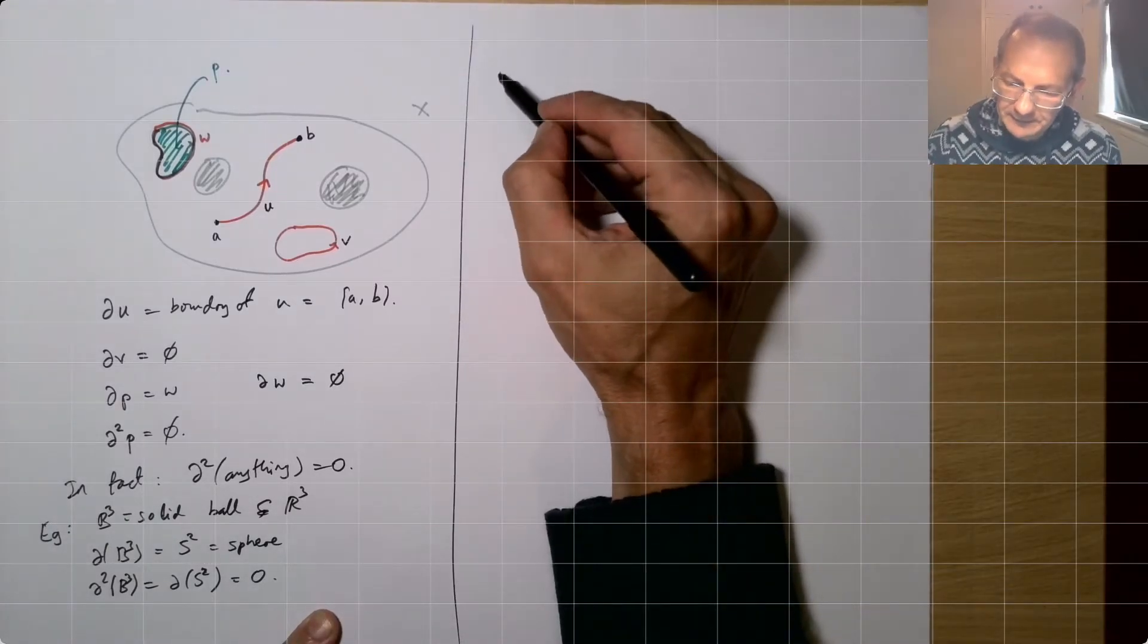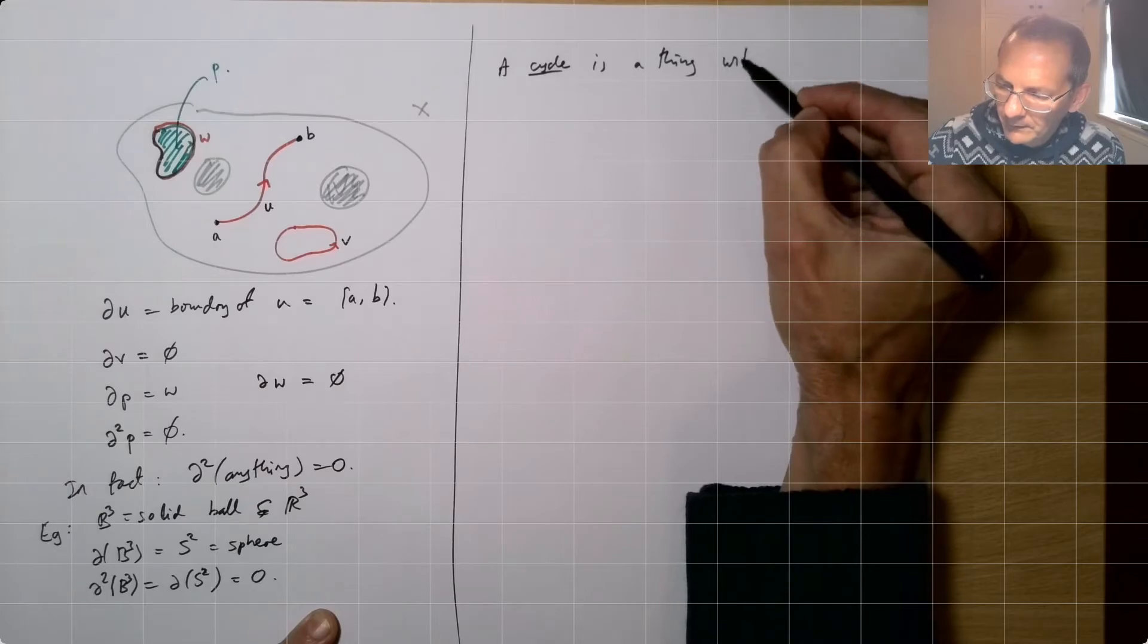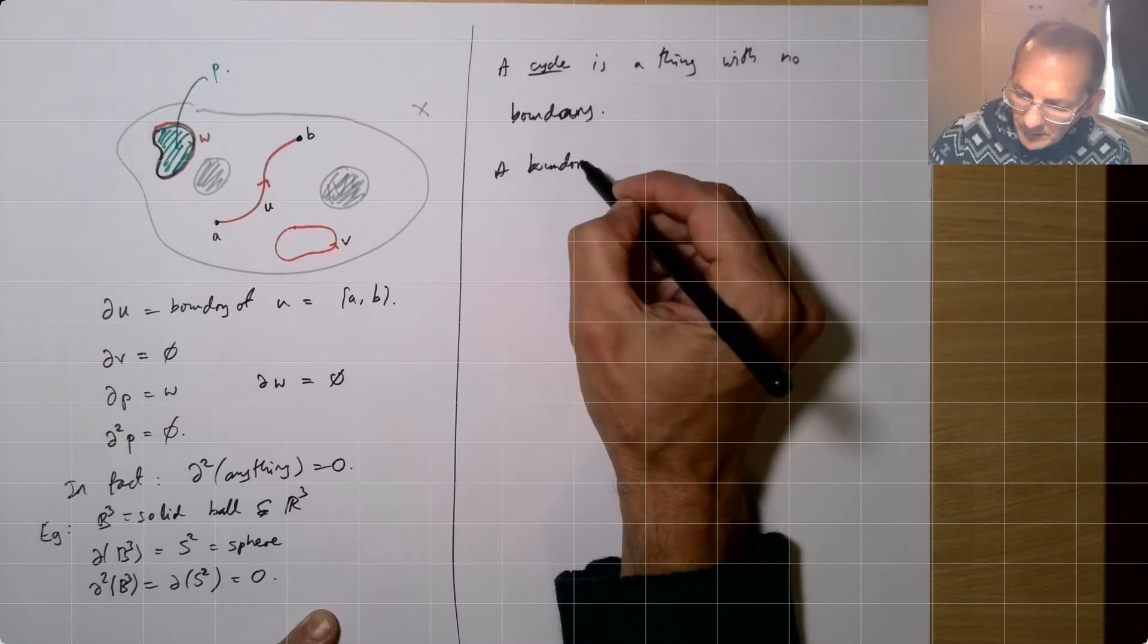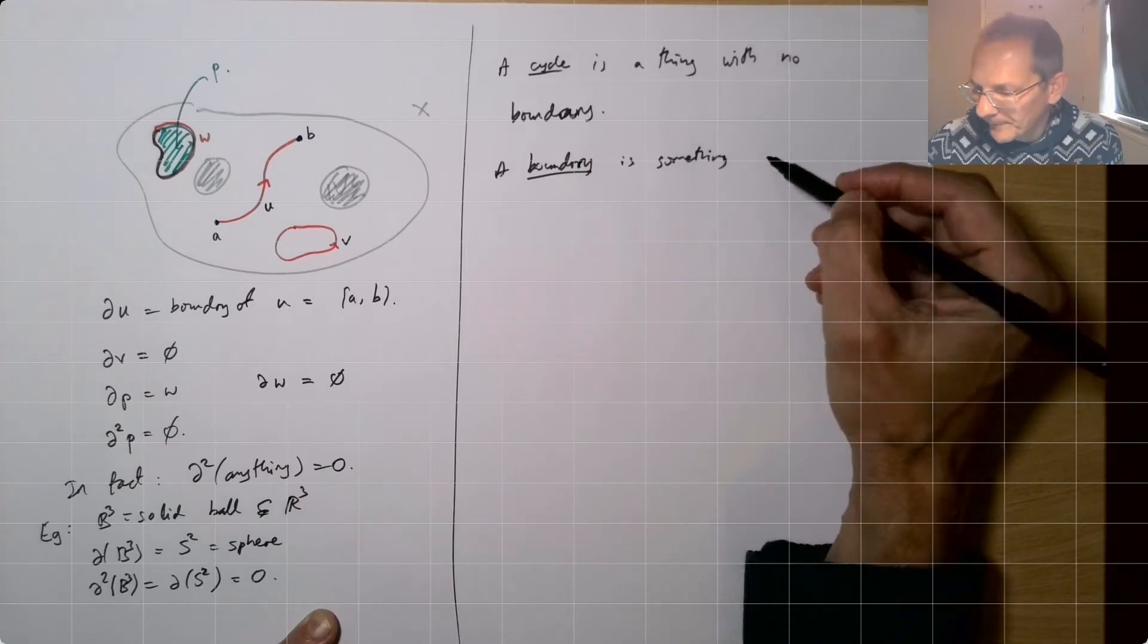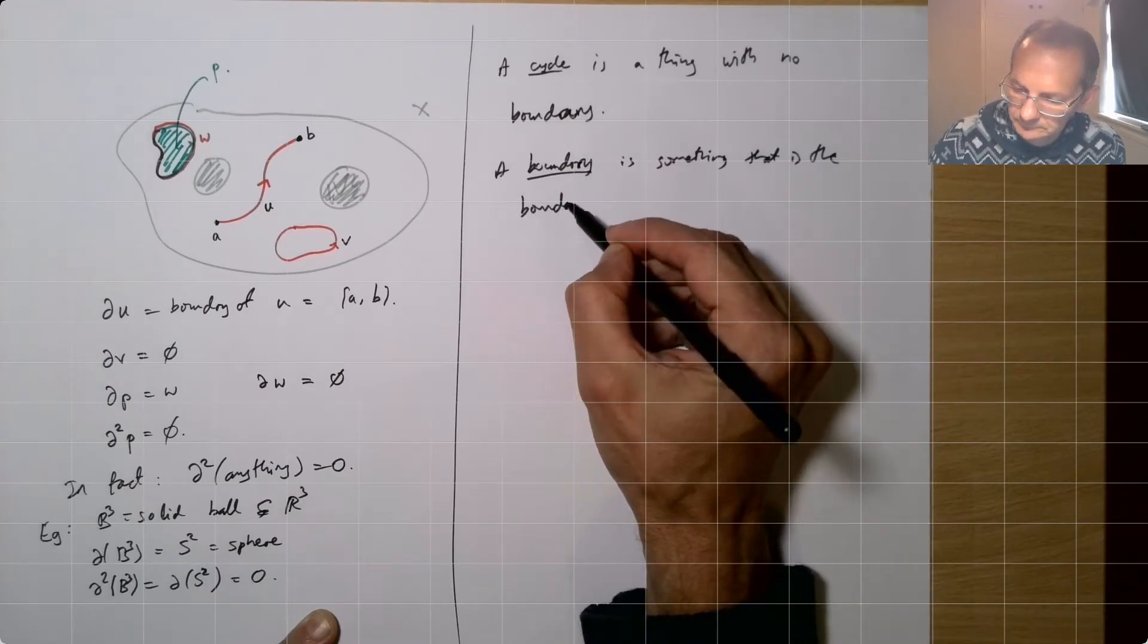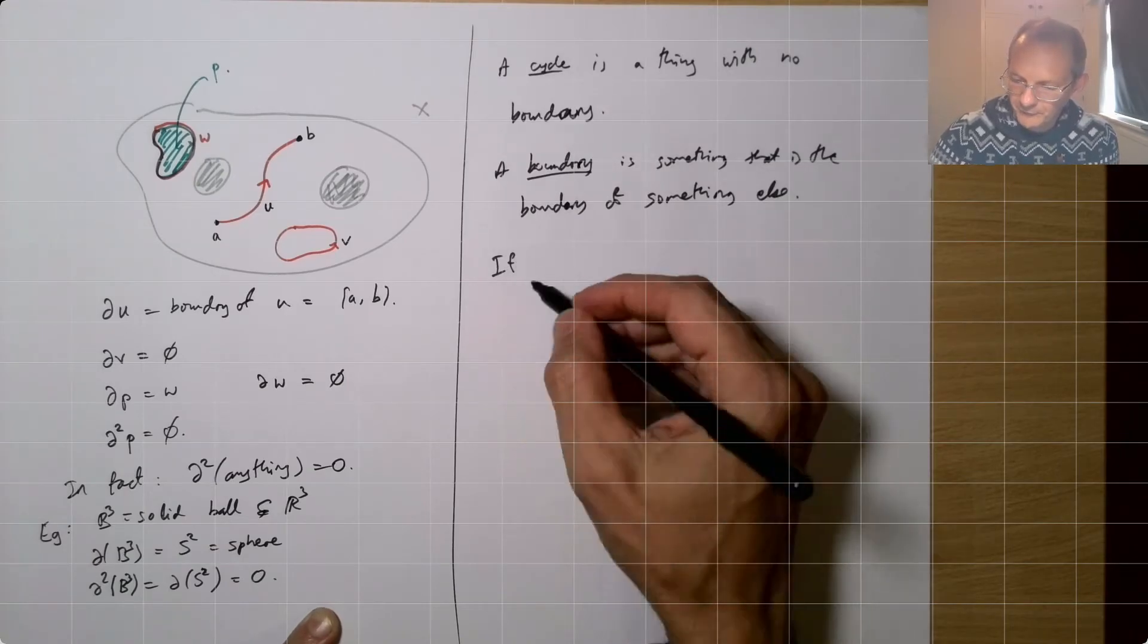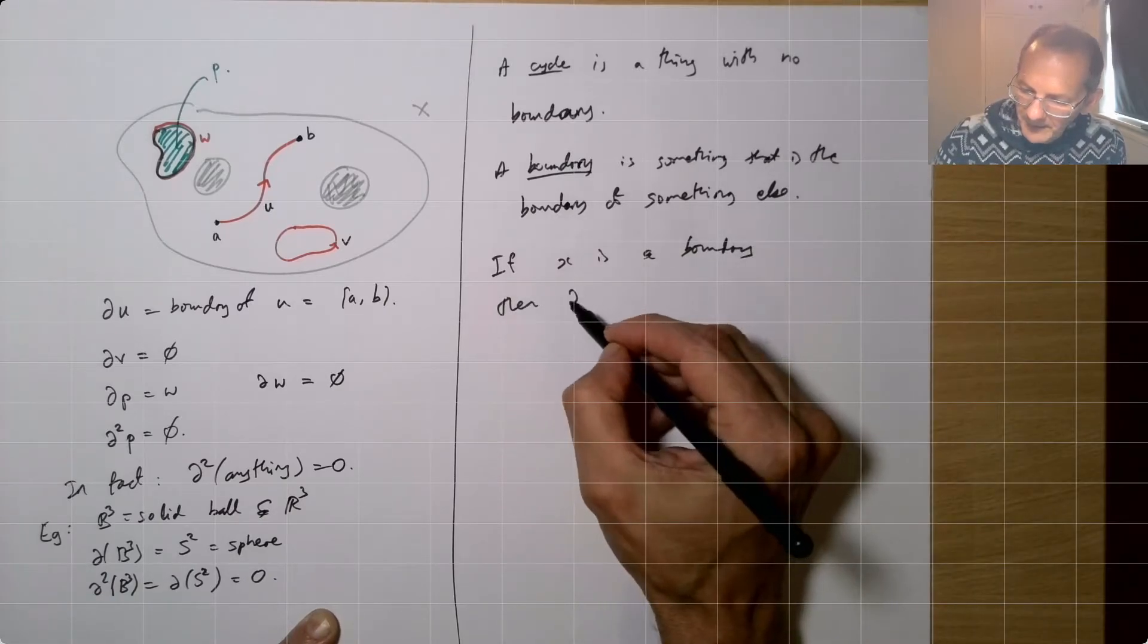So the words we use, a cycle is a thing with no boundary. A boundary is just something that's the boundary of something else. So if x is a boundary, then that means that x is dy.